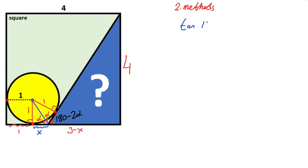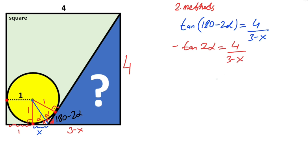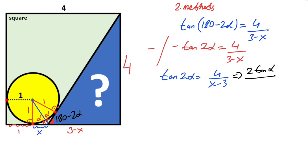If we calculate tangent of (180 minus 2 alpha), it equals 4 over (3 minus x), which can be written as minus tangent 2 alpha. Multiplying both sides by minus one: tangent 2 alpha equals 4 over (x minus 3). We know the expansion of tangent 2 alpha equals 2 times tangent alpha over (1 minus tangent squared alpha), equal to 4 over (x minus 3). And tangent alpha equals 1 over x.